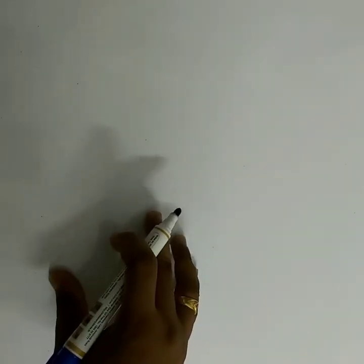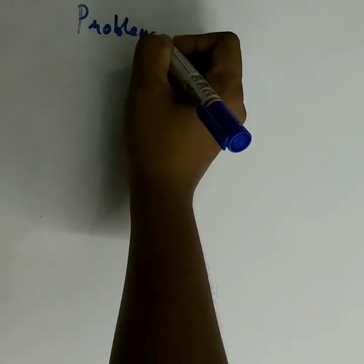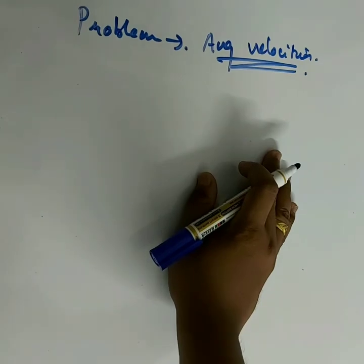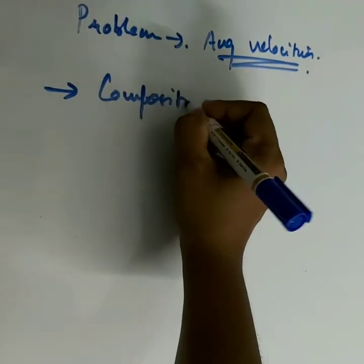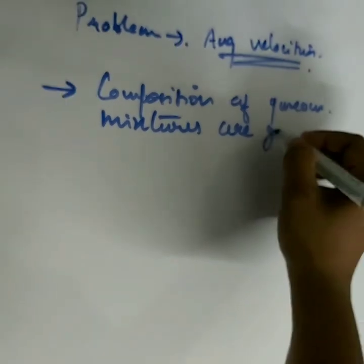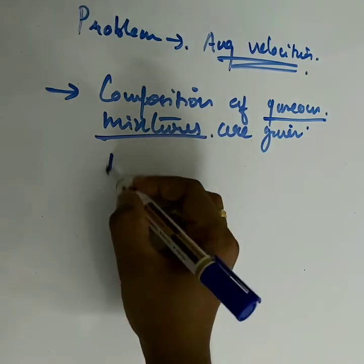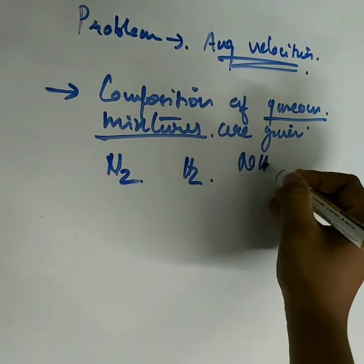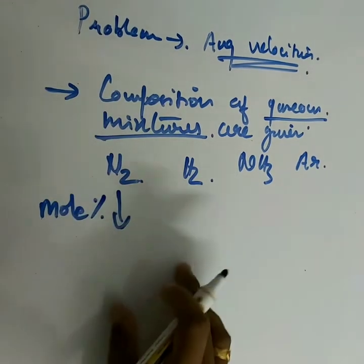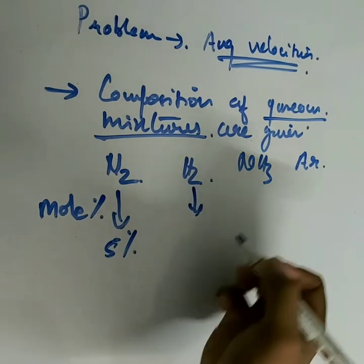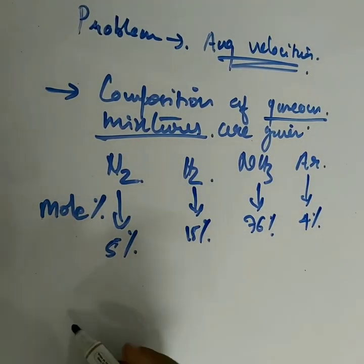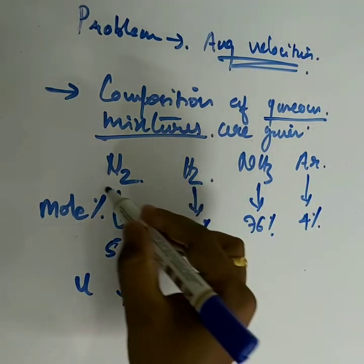Hello everyone. We are here to discuss a numerical problem related to average velocities. In this problem, the composition of a gaseous mixture is given. The components of this mixture are nitrogen, hydrogen, ammonia, and argon. The mole percentages given are: nitrogen 5%, hydrogen 15%, ammonia 76%, and argon 4%. They also give the absolute velocity data for each of these components.